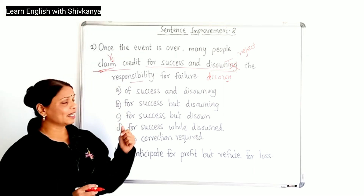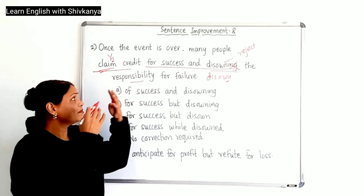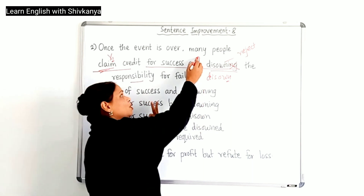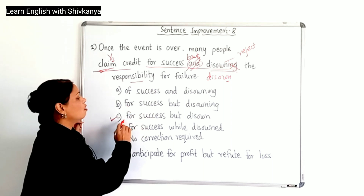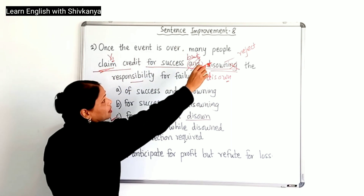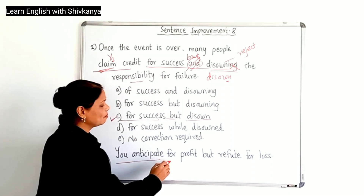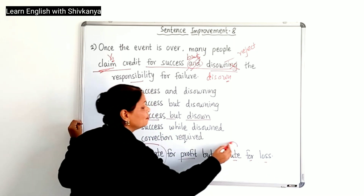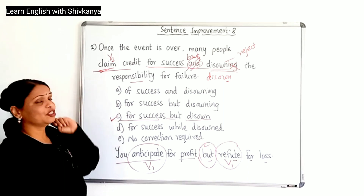Second correction: if you look at the sentence, we are talking about two opposite ideas. Many people claim credit for success, but they reject the responsibility for failure — two contrasting ideas. We don't use 'and'; we use the conjunction 'but.' So option C is the correct one: 'for success but disown.' Many people claim credit for success but reject or disown the responsibility for failure. Like in the example: you anticipate for profit but you refute for loss — 'anticipate' V1, 'refute' V1. Two contrasting ideas are combined by 'but.'